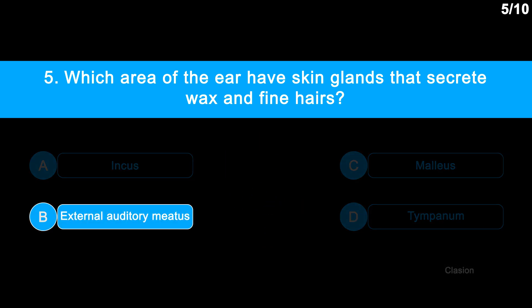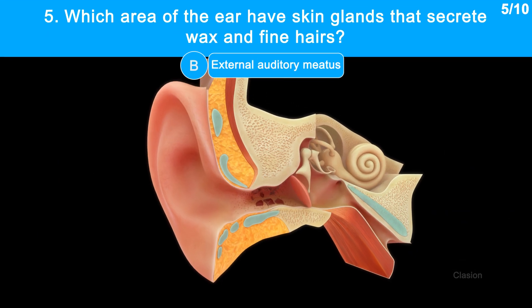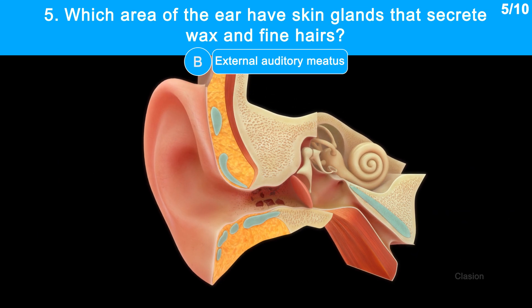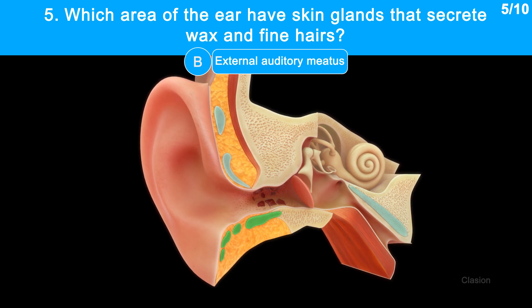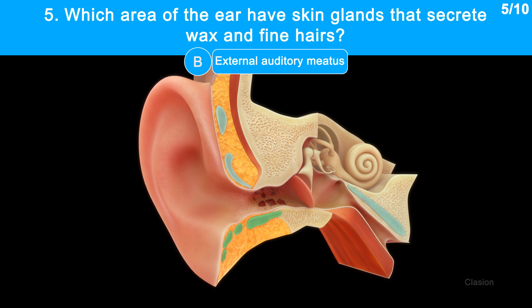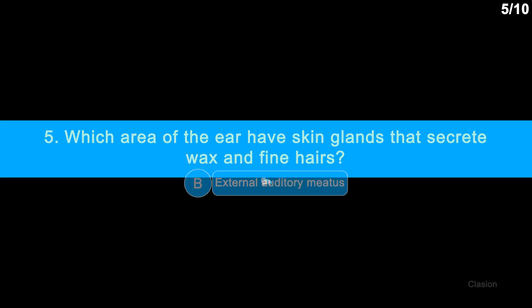The correct answer is option B, external auditory meatus. The external auditory meatus has hair and wax-secreting glands in its skin.